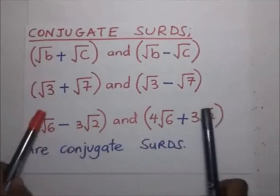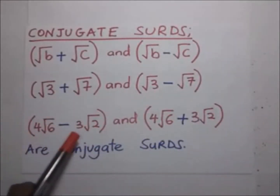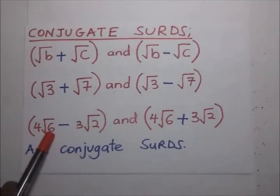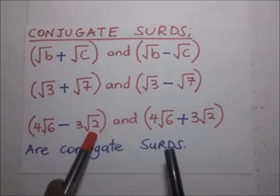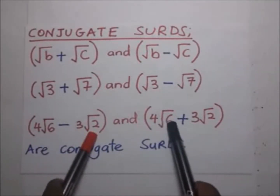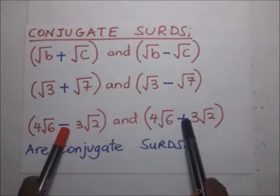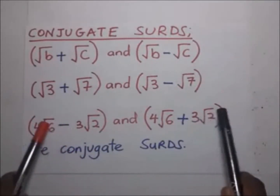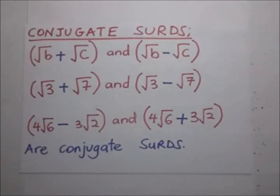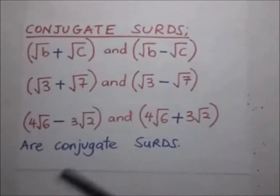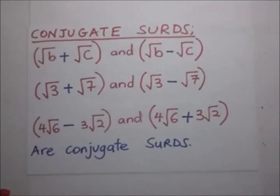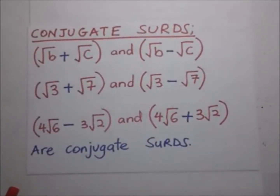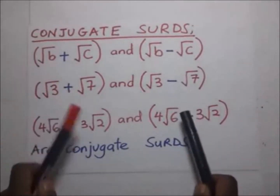It's the same with mixed surds. For example, four root of six minus three root of two, and four root of six plus three root of two — these two are conjugate surds. They are the same figures; the only difference is that one has a plus and the other has a minus.